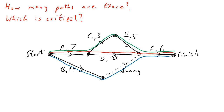An important point on this diagram is this node where all three paths converge. If we follow just the green path coming into this node — 7 plus 3 plus 5 — it takes 15 hours. If we follow the red path it takes 17 hours to get there, and if we follow the blue path only 14 hours to get to that highlighted node. So you can't start activity F until E, D, and B have all been completed.